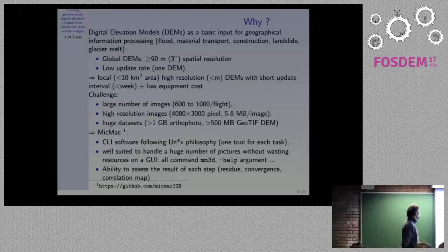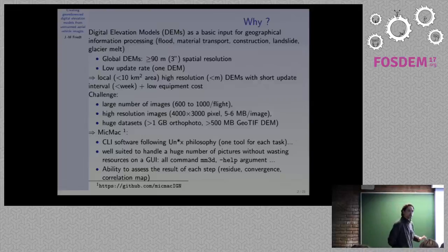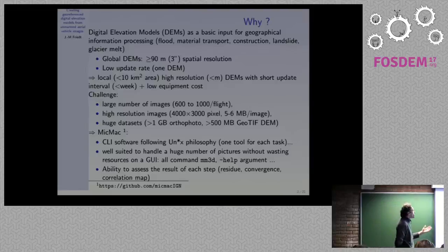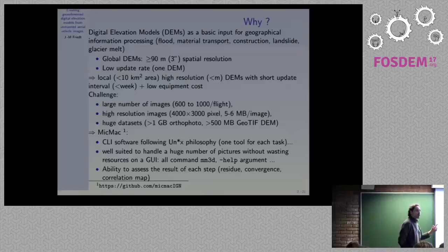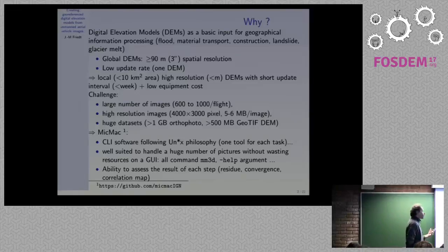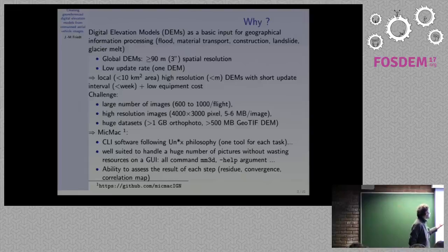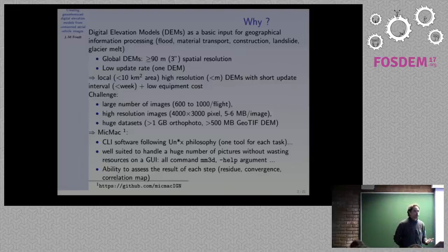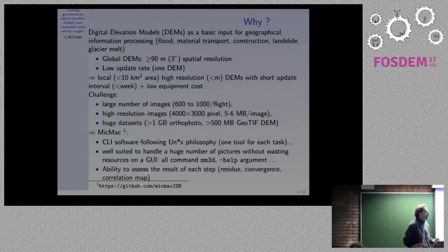If you rely on global digital elevation models such as SRTM, you get what I consider low resolution — typically 3 arc-second over most of the world, 1 arc-second over the US, so roughly 30 to 90 meter lateral resolution. Additionally, you usually have only one DEM, so if you want to compute differences between DEMs you need repeated acquisitions, which are usually not available. What I need is local DEMs covering less than 10 square kilometers, at sub-decimeter pixel size, with a high update rate — one DEM every week or month — so I can subtract them and see material movement or elevation changes.